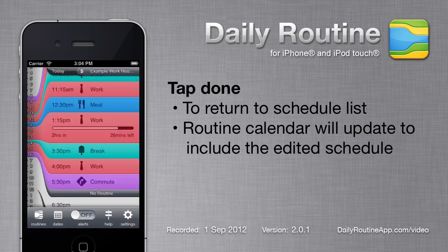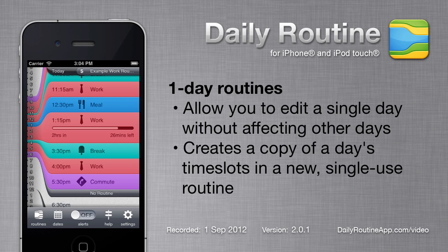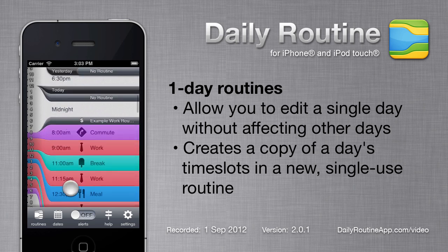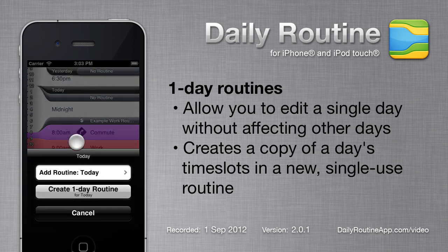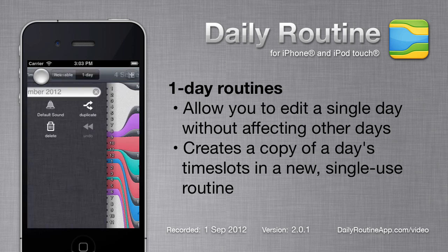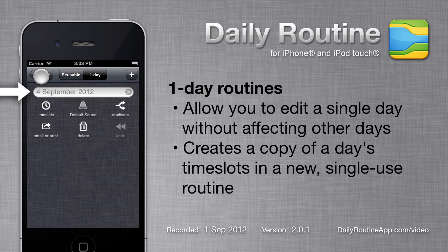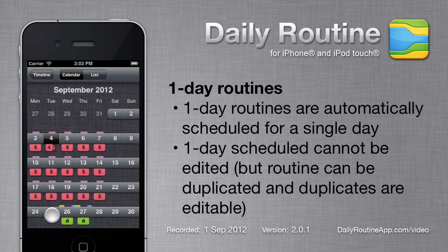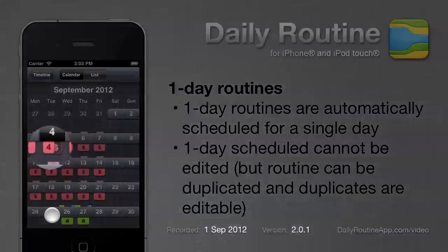Often we need to edit a single day's routine without affecting other days. To do this, tap the day header and choose the create one day routine option. Daily Routine will copy all time slots for all routines scheduled on that day into a special new routine that is applicable only to that day. The routine is named after the date it is bound to. Daily Routine will also create a one day schedule for the new routine. If we look at our schedules, we can see the one day routine on the calendar.